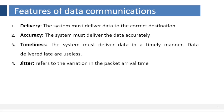Third, timeliness — the system must deliver data in a timely manner. Data delivered late are useless. In the case of video and audio, timely delivery means delivering data as they are produced, in the same order that they are produced, and without significant delay. This kind of delivery is called real-time transmission. Fourth, jitter — jitter refers to the variation in the packet arrival time. It is the uneven delay in the delivery of audio or video packets.